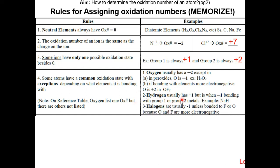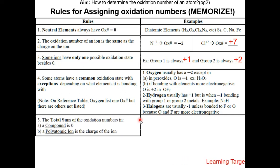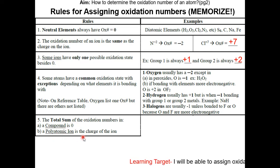Halogens usually have a negative one oxidation state unless bonded to fluorine or oxygen, because fluorine and oxygen are more electronegative. Rule five: the total sum of oxidation numbers in a compound is zero, and the total sum of oxidation numbers in a polyatomic ion is the charge of the ion.